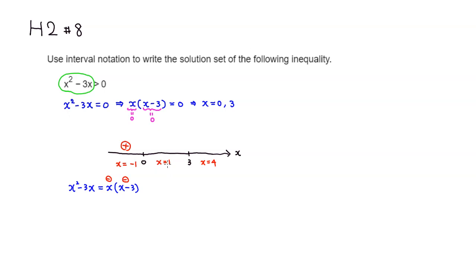Between 0 and 3, plugging in x equals 1: the x factor is positive, and 1 minus 3 is negative. Positive times negative gives a negative value there. For x equals 4: x is positive and 4 minus 3 is also positive. Positive times positive gives a positive value. So x squared minus 3x is positive on the interval before 0 and on the interval after 3.